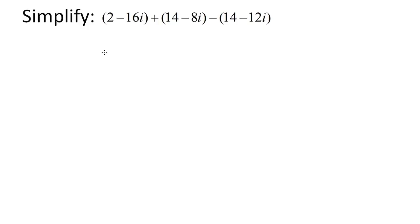Consider the following example: simplify (2 − 16i) + (14 − 8i) − (14 − 12i). We have a combination of addition and subtraction of complex numbers. How will we solve that? Straightforward.